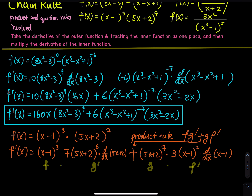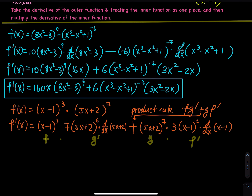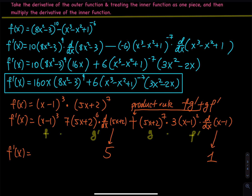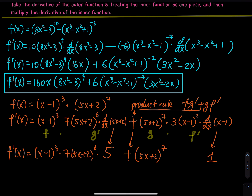The next step is you clean up the derivative. So f prime of x — we take the derivative. The derivative of 5x plus 2 gives a 5. The derivative of x minus 1 gives a 1. Then we copy everything else: x minus 1 to the third, times 7, times 5x plus 2 to the 6th, times 5. Then plus 5x plus 2 to the 7th, times 3 times x minus 1 to the second power.